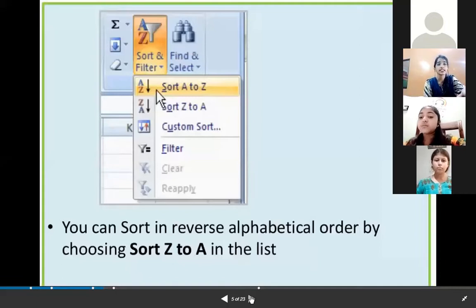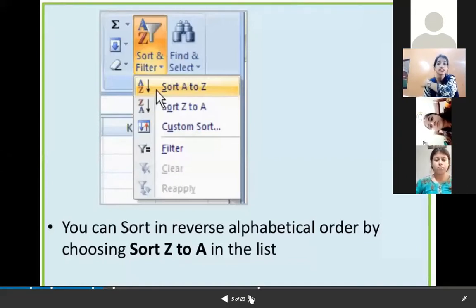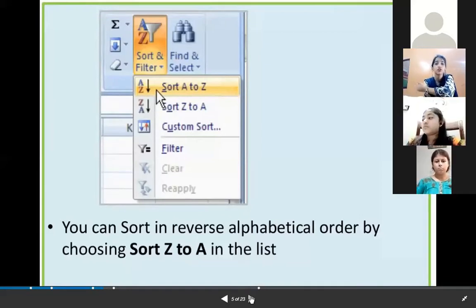See, this is the part from where we can sort the data alphabetically. You can sort in reverse alphabetical order by choosing Sort Z to A.